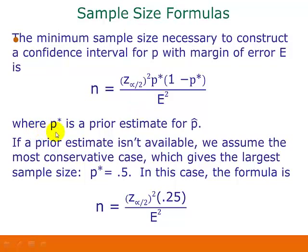This is where p-star is a prior estimate for our sample proportion. In other words, if there was a prior study done, if we have some kind of way of estimating what our sample proportion might turn out to be, then we would use it in here.